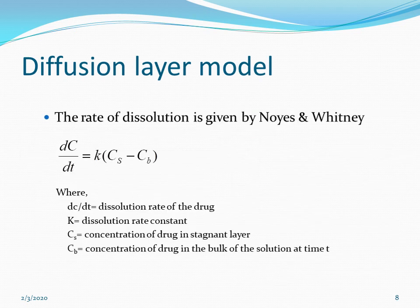This is best explained by the Noyes-Whitney equation, which states: dC/dt = K(Cs − Cb), where dC/dt is the dissolution rate of the drug, K is the dissolution rate constant, Cs is the concentration of drug in the stagnant layer, and Cb is the concentration of drug in the bulk of solution. This equation indicates that the rate of dissolution is directly proportional to the concentration gradient.